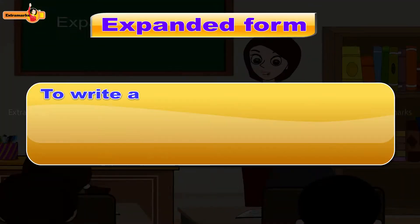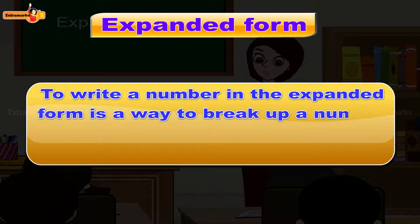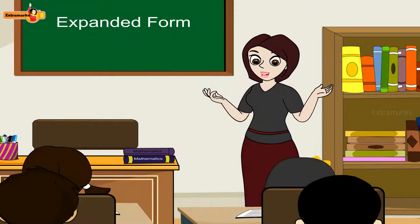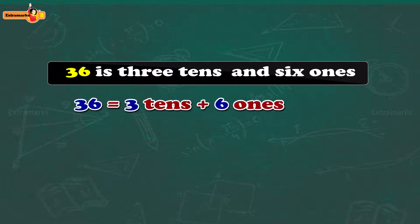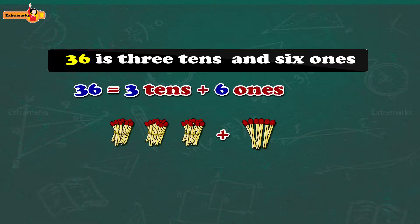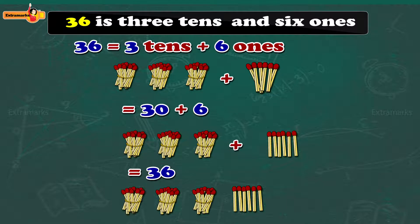Twelve is equal to ten plus two, which is equal to twelve. To write a number in the expanded form is a way to break up a number to show how much each digit in the number represents. For example, the number thirty-six is read as three tens and six ones. Thirty-six is equal to three tens plus six ones, which is equal to thirty plus six, which is equal to thirty-six.